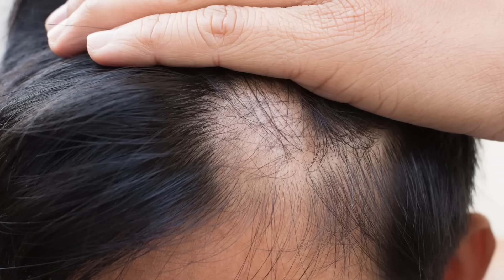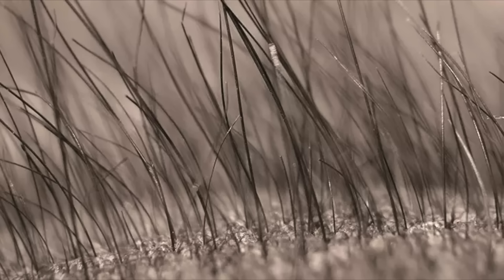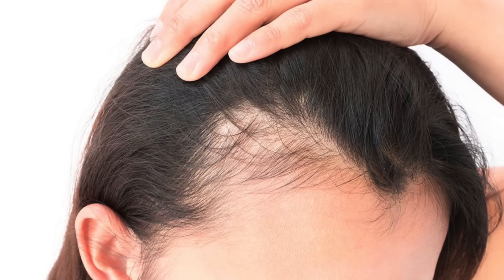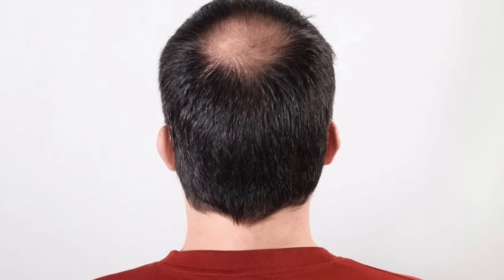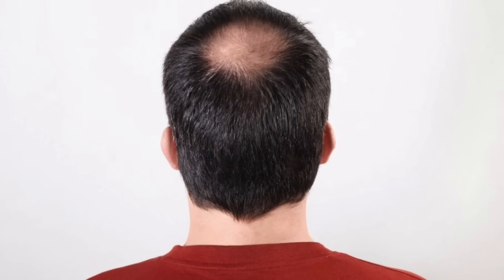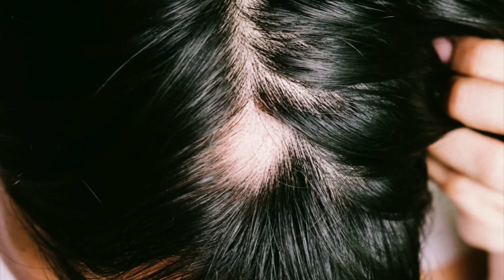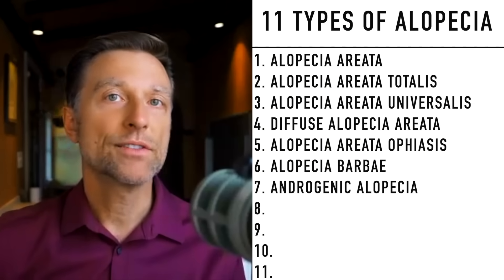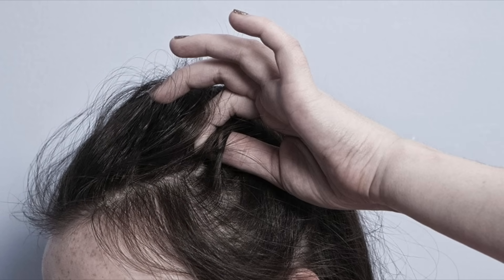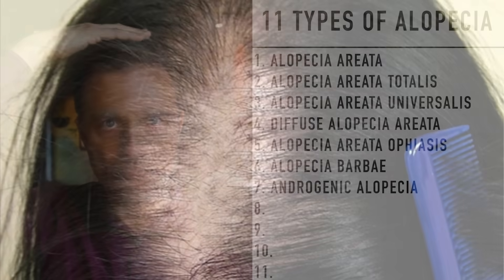The next one is called androgenic alopecia, also known as pattern hair loss. Normally hair grows in little groups of three to four hairs. With this condition, those little groups start shrinking and the number of hairs in each group gets less and less until you see more scalp than hair. This is commonly known as male pattern hair loss, but women develop it too. In fact, 50% of men over 50 have this condition, and 50% of women over 65 start developing it.